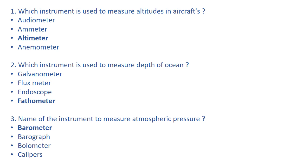Audiometer is an instrument used to measure the intensity of sound. Emitter is an instrument used to measure the strength of electric current. Anemometer is used to measure the velocity and direction of winds. Let's come to question number two: which instrument is used to measure the depth of the ocean?